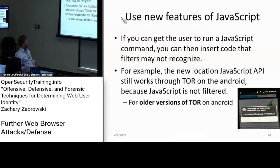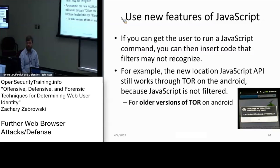You can use new versions of JavaScript to basically trick the user into revealing more information than they should. For example, with an Android phone that had a Tor client but went through a proxy, they had JavaScript loaded through another site. You could actually use the JavaScript location API to request the physical location of where you are, and if the user hits yes, it would return where they are physically located — even through Tor.